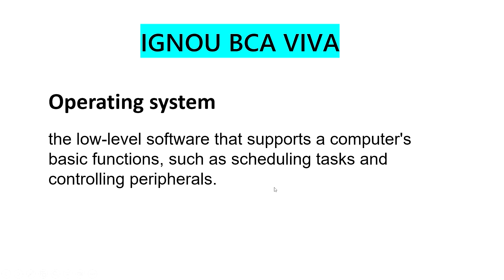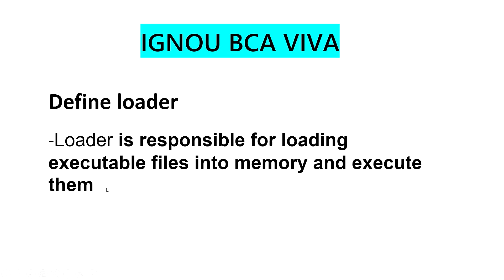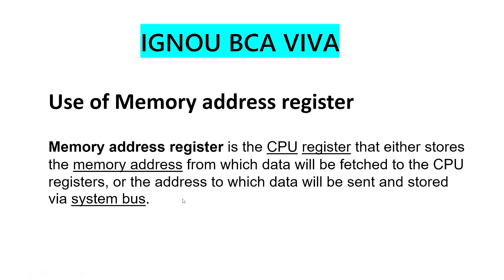Compiler and interpreter is a very common question. A compiler takes source code from a programming language and converts it into machine code or byte code. An interpreter takes a high-level programming language program and executes it instruction by instruction. The loader is responsible for loading executable files into memory and executing them.